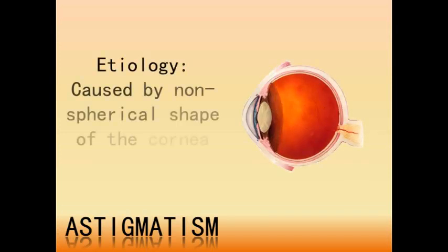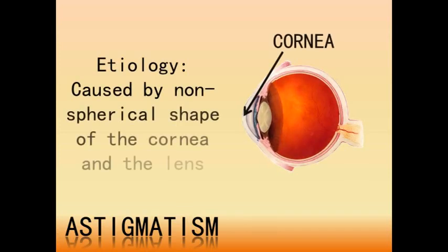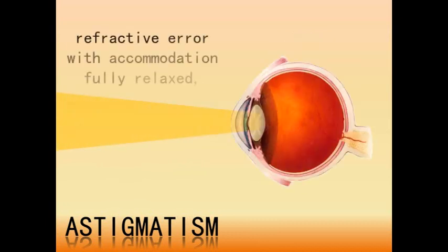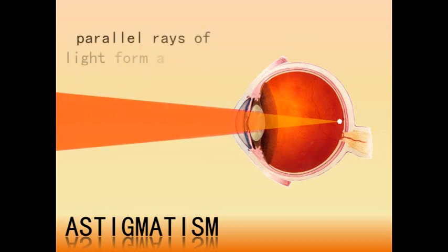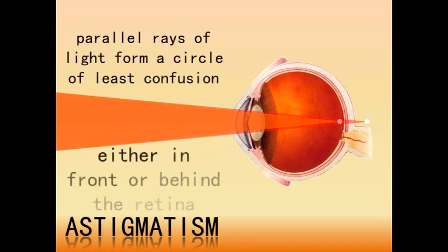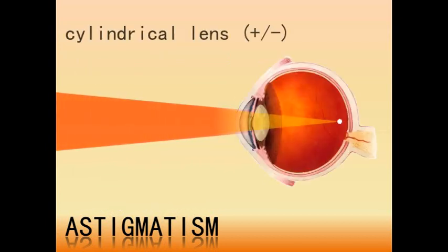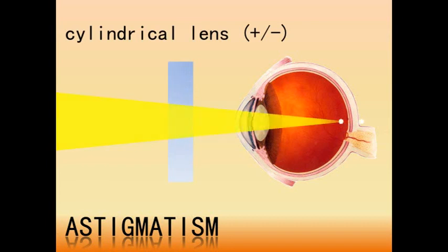Astigmatism occurs when the cornea or lens of the eye is irregular in shape. It is a refractive error in which, with accommodation fully relaxed, parallel rays of light form a circle of least confusion and focus either in front of or behind the retina. Astigmatism can be corrected by a cylindrical lens, either positive or negative.